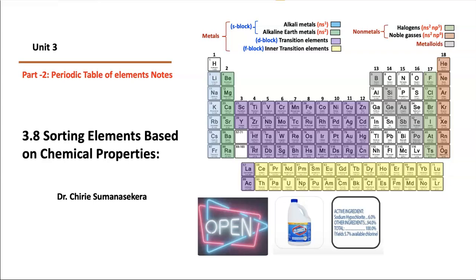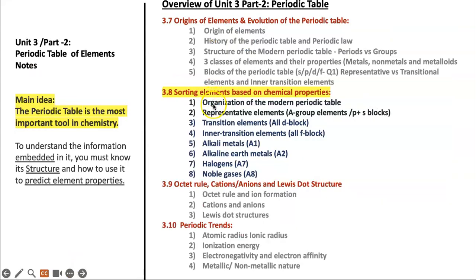Hello, this is lesson 3.8, Sorting Elements Based on Chemical Properties. We are going to look at the organization of the modern periodic table, specifically the long version of it, and figure out how to write noble gas notations for F and D block elements.